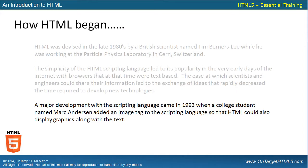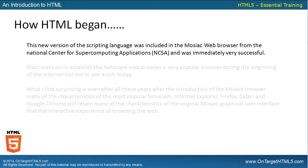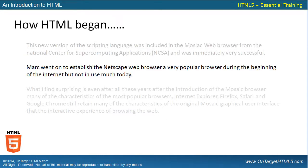A major development with the scripting language came in 1993 when a college student named Marc Anderson added an image tag to the scripting language so that HTML could also display graphics along with text. This new version was included in the Mosaic Web Browser from the National Center for Supercomputing Applications, or the NCSA, and was immediately very successful.